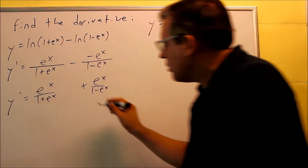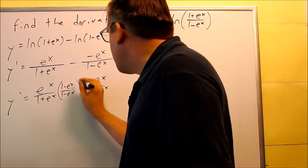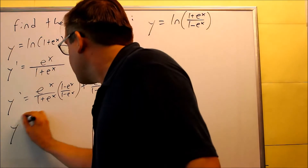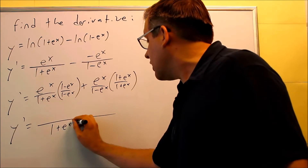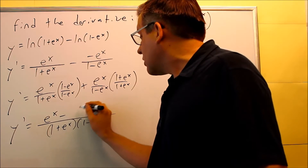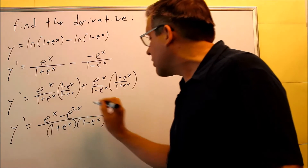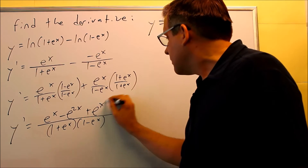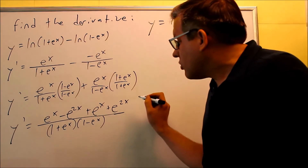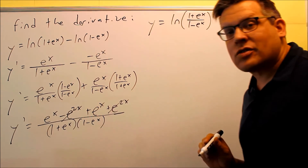Now apply common denominators. Multiply the first fraction by (1−eˣ)/(1−eˣ) and the second by (1+eˣ)/(1+eˣ). The common denominator is (1+eˣ)(1−eˣ). On top, distributing gives eˣ(1−eˣ) + eˣ(1+eˣ) = eˣ − e^(2x) + eˣ + e^(2x). The e^(2x) terms cancel — one negative and one positive — and the two eˣ terms are like terms, giving 2eˣ.